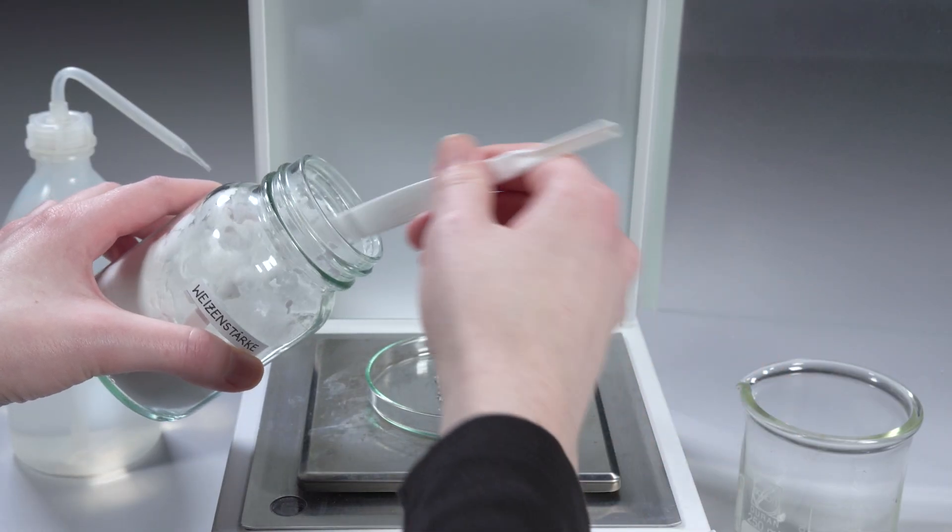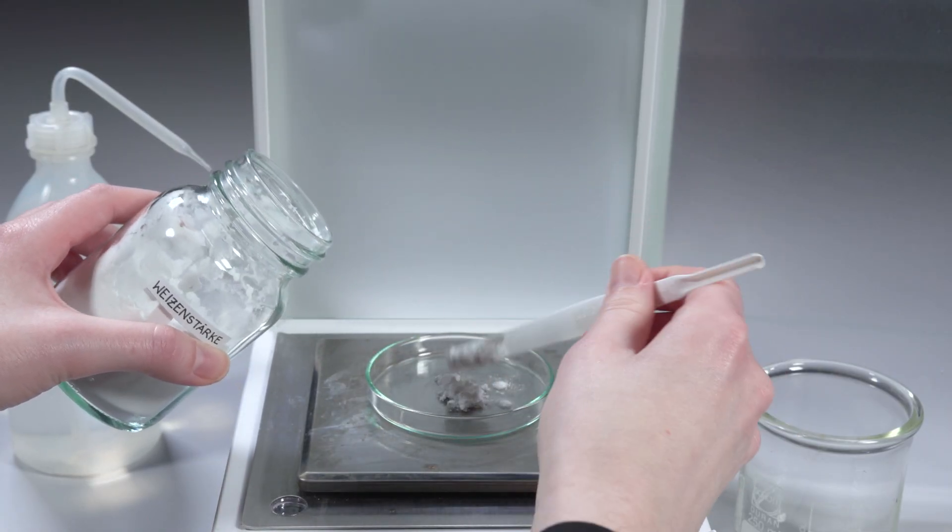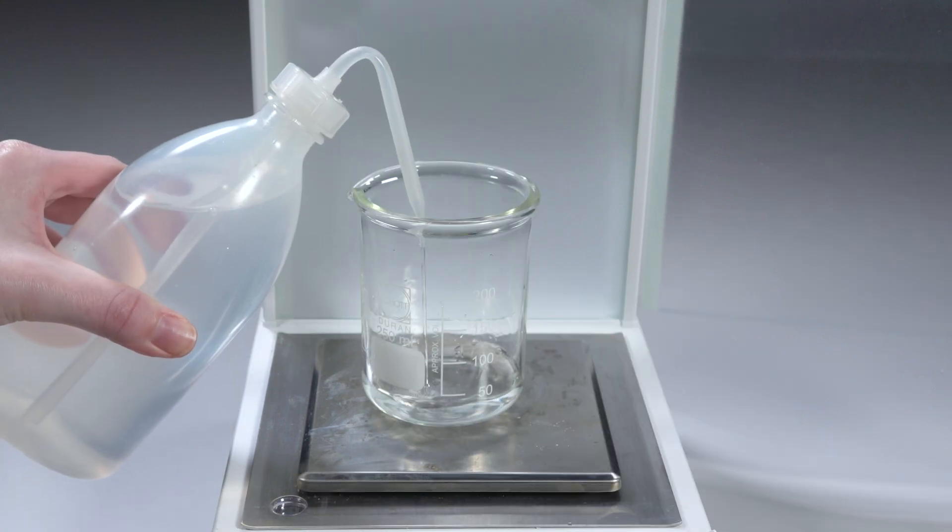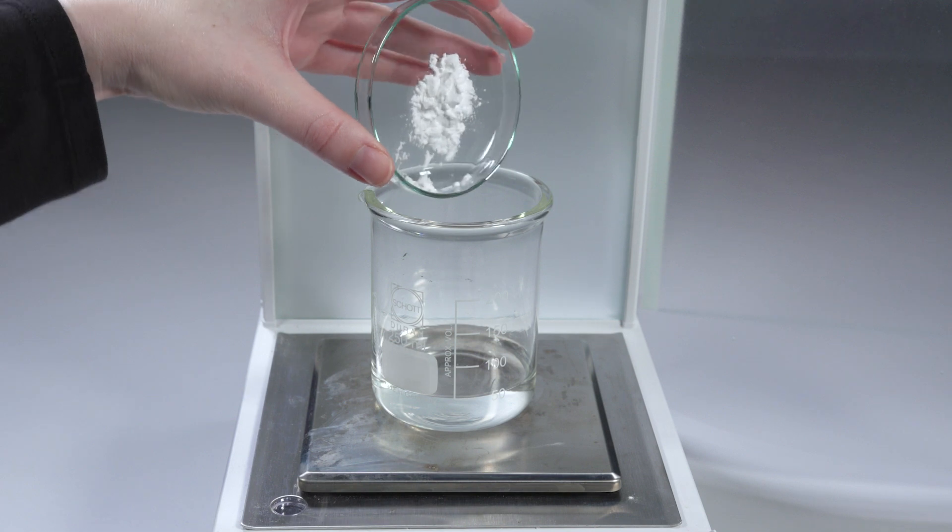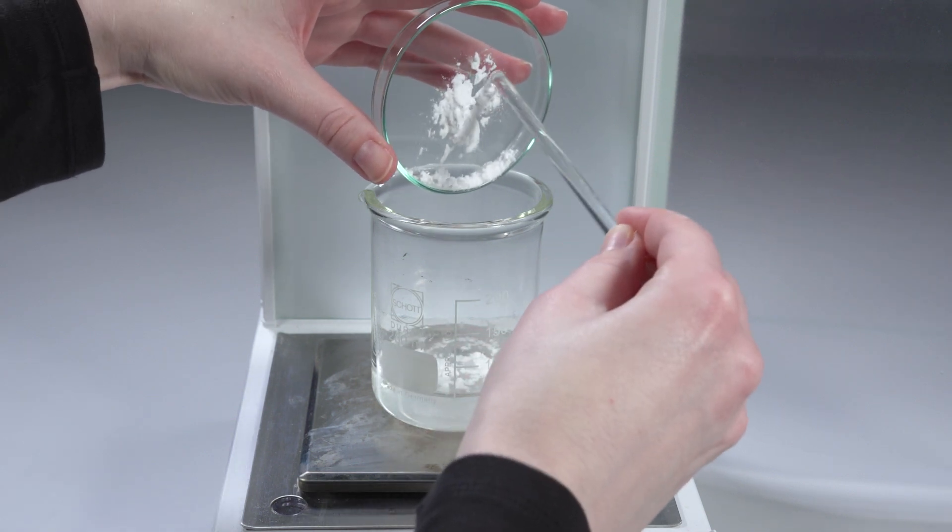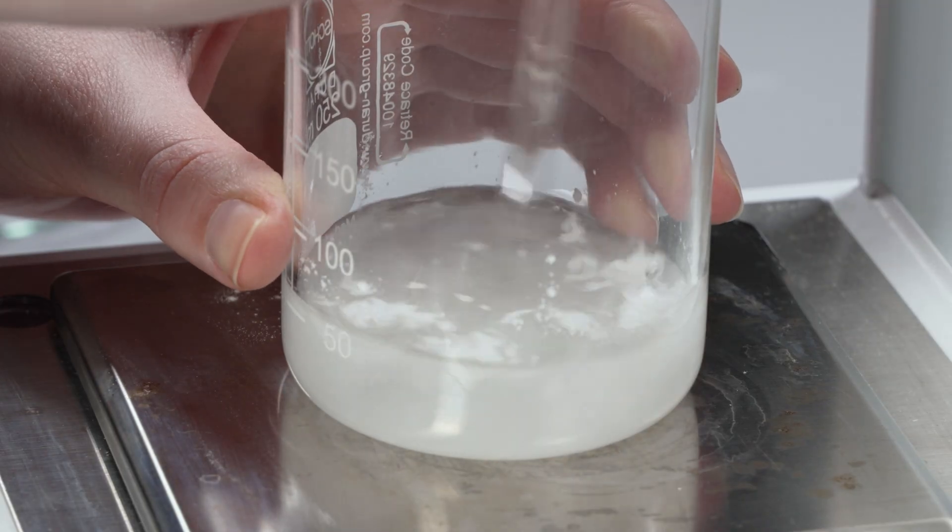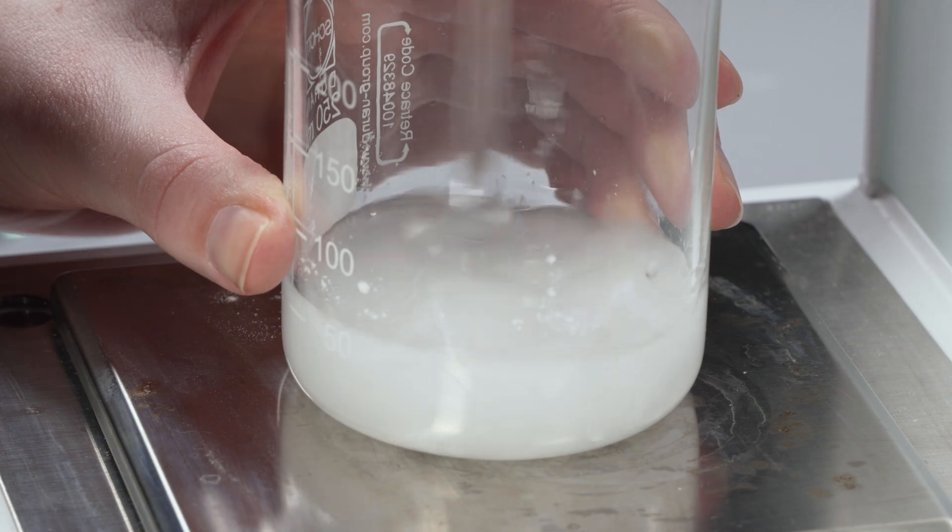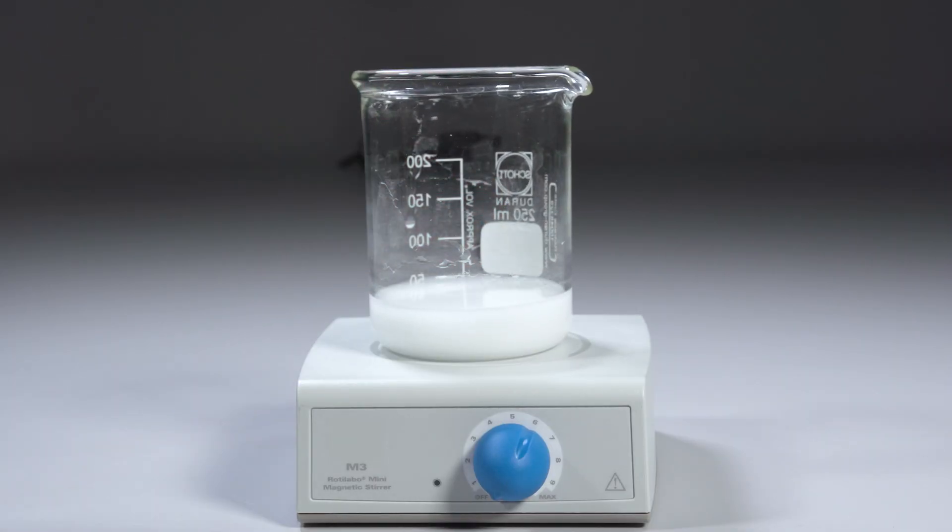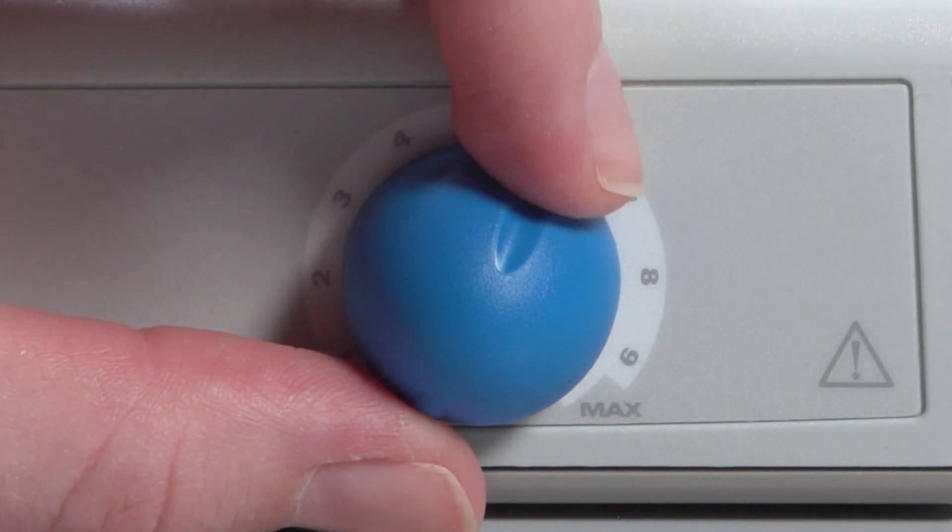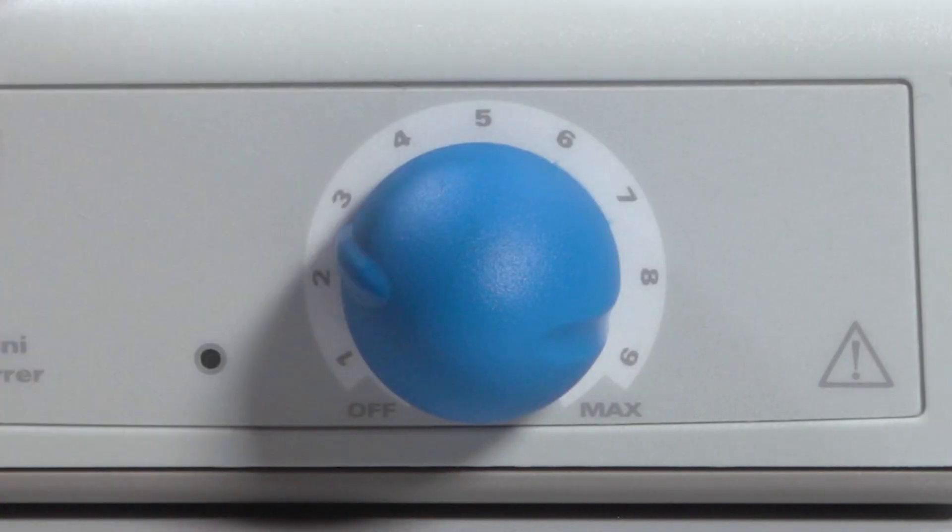First, the starch powder is weighed. Then the water is weighed. Now the starch powder is added to the water and stirred. Depending on the recipe, the starch suspension is left to swell cold before cooking, for example on a magnetic stirrer.